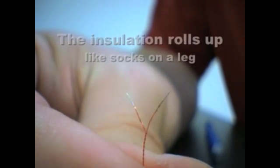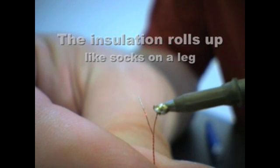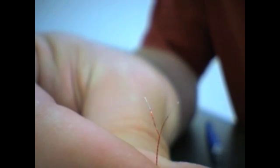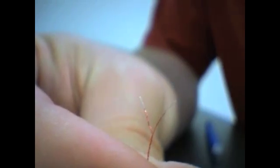You can see the insulation, that black stuff kind of rolls up like socks on a leg, or it's rolling down in this case. Now you can see how the wire looks silvery because it's tinned.